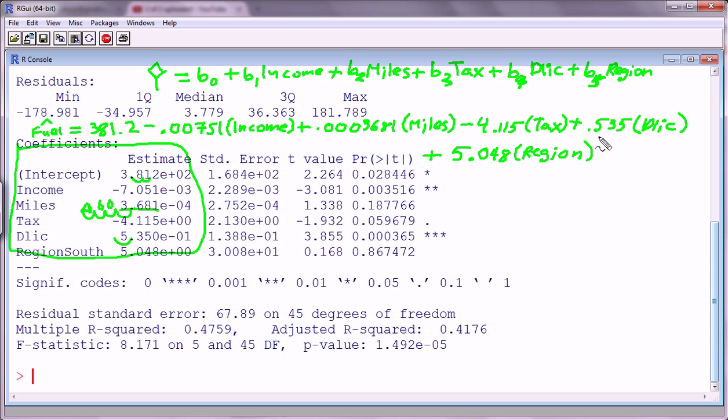This right here that I've drawn, this whole long process that I tried to do slowly together, is our multiple regression model. This is what essentially we can use now to make new predictions. So we can plug in an income, a miles, a tax, a driver's license, and a region, and we will get a predicted fuel consumption for a state, for a given state. By the way, this is zero, not six.